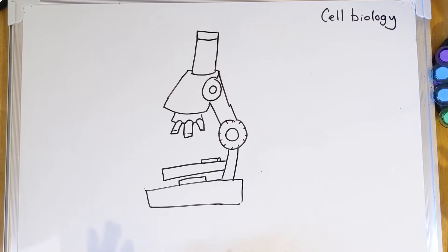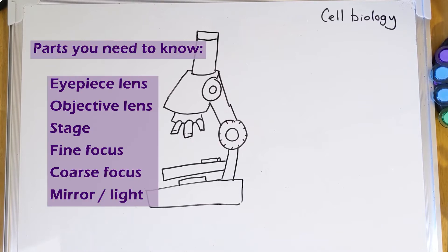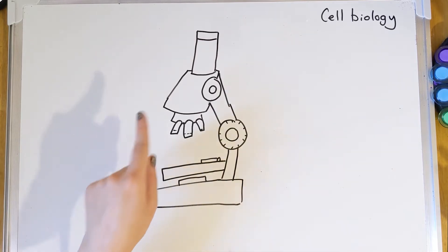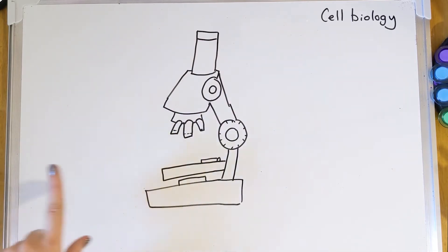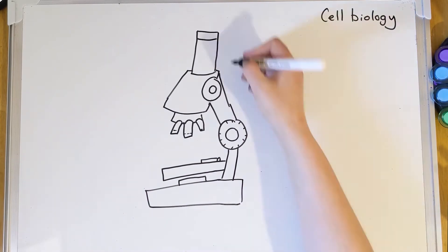Let's start by looking at the parts of the light microscope — the one you're probably most familiar with from school. I'm not going to expect you to draw the diagram, but I'd suggest making a little list of what the parts are called, roughly where on the microscope they are, and what they do. I'll pull all the labels on first and then talk through them one at a time.